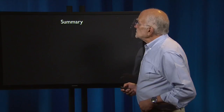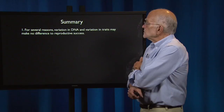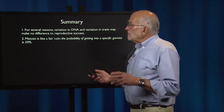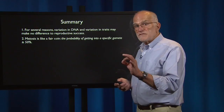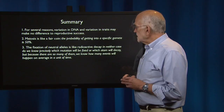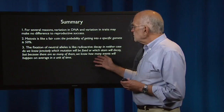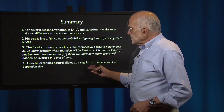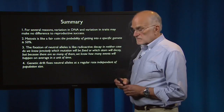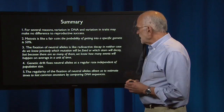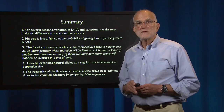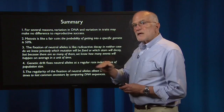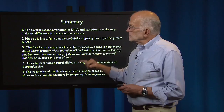To summarize: there are several reasons why variation in DNA and traits might make no difference to reproductive success. Meiosis is like a fair coin — the probability of getting into a specific gamete is 50%. The fixation of neutral alleles is like radioactive decay: in neither case do we know which mutation will be fixed or which atom will decay, but we know how many events will happen, giving us a clock. Genetic drift fixes neutral alleles at a regular rate independent of population size. The regularity of neutral allele fixation allows us to estimate times to last common ancestor by comparing DNA sequences. Thus, random evolution at the microevolutionary level gives us a clock that allows us to put timelines on the macroevolutionary pattern of relationships and phylogenetic trees.